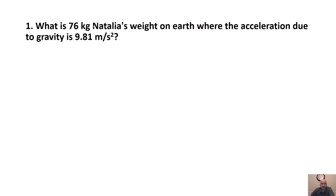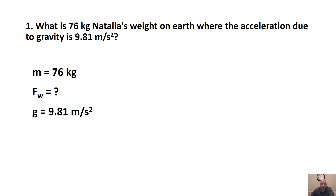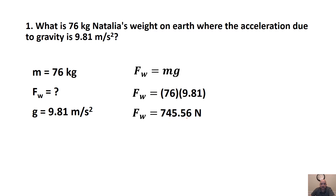Here's an example: What is 76-kilogram Natalia's weight on Earth where the acceleration due to gravity is 9.81 meters per second squared? It's useful to make a given list. Kilograms is mass. It's asking you for weight, so Fw is question mark. They give you g of 9.81 meters per second squared. Plug in your values, multiply them out, and you get 745.56 newtons.